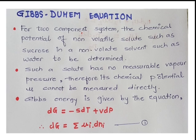The summation symbol is used because we now have a two-component system: one is a solute and another is a solvent. The chemical potential and number of moles of the solute are different from those of the solvent. So dG equals summation of mu_i times dn_i, where i represents the i-th component. For a two-component system it is easy to measure the change in Gibbs free energy. This is equation number one.